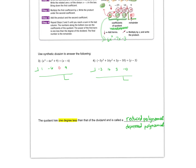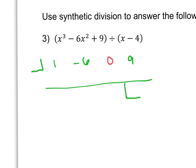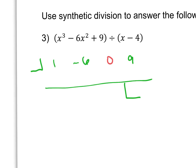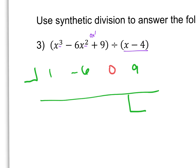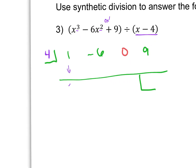Let's look at examples of synthetic division. On this first example, notice that we are missing the x term: we have degree 3, degree 2, but we do not have a degree of 1. That's why I have 0 in there as a placeholder. If we're asked to divide by the factor x minus 4, we write that as a positive 4 in our box — we switch the sign. So x minus 4 as a factor means we put a positive 4 in the box. We add straight down: 1 comes straight down, then we multiply 1 times 4 to get 4.